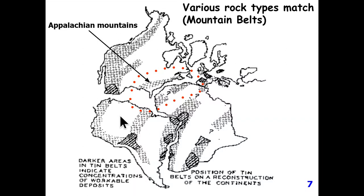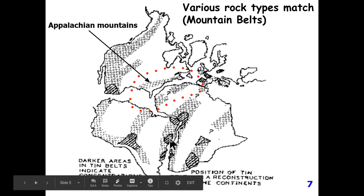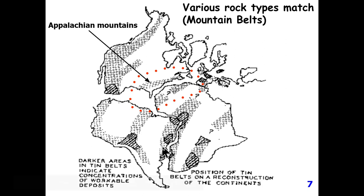The next line of evidence was the correlation of rock types, specifically the correlation of lithologic mountain belts. The stippled areas on the diagram represent tin deposits. For Earth to form tin deposits, very specific geological conditions have to exist, making them isolated and specific. When you reconstruct the continents back to Pangaea time, these tin belts begin to match up and line up, as well as rock types—correlating both texture and composition. On the east coast of South America and the west coast of Africa, these tin belts line up pretty well.